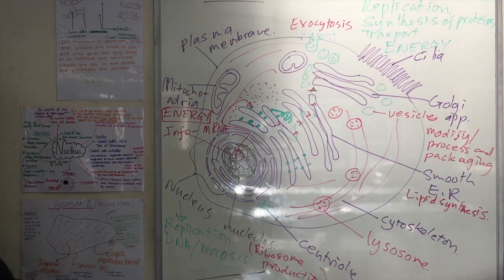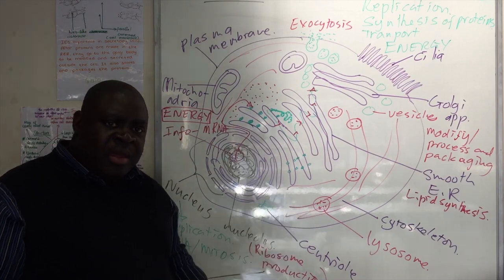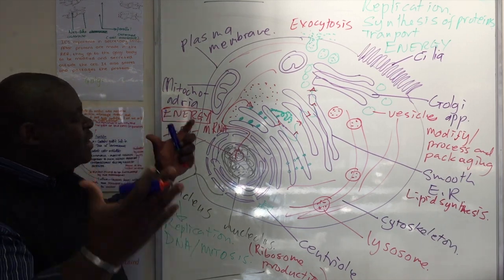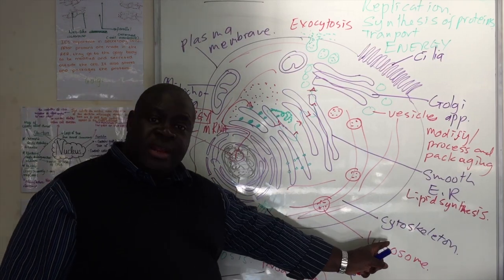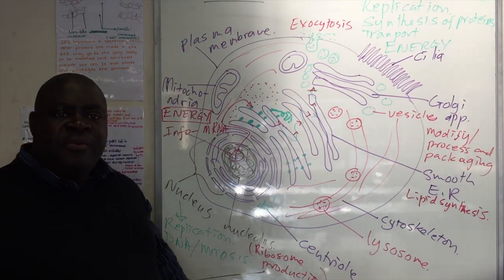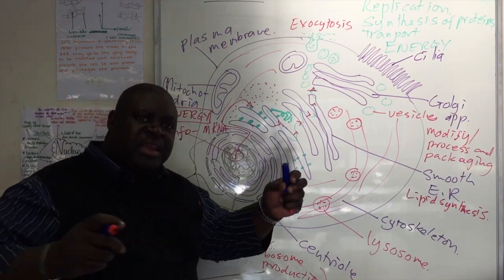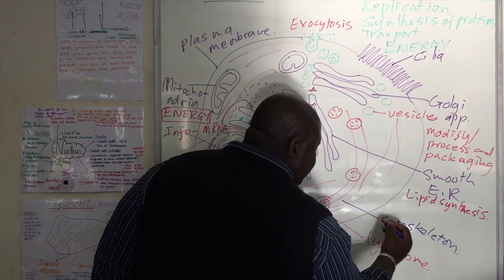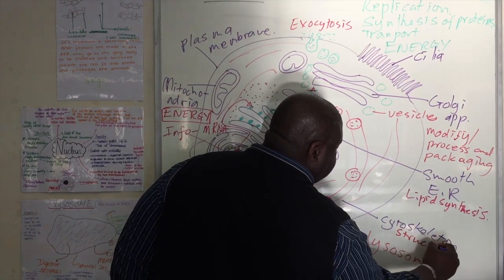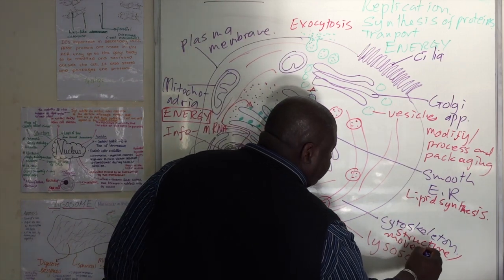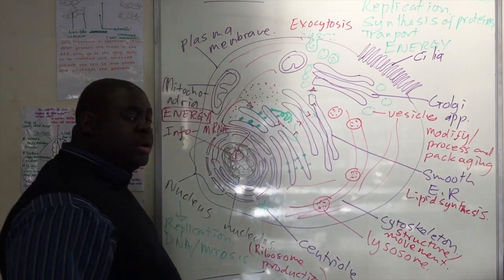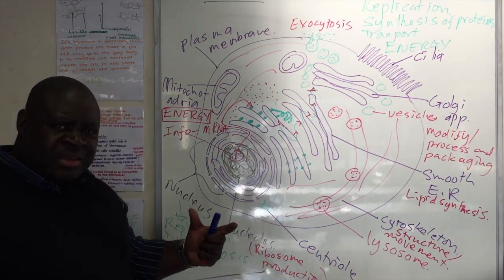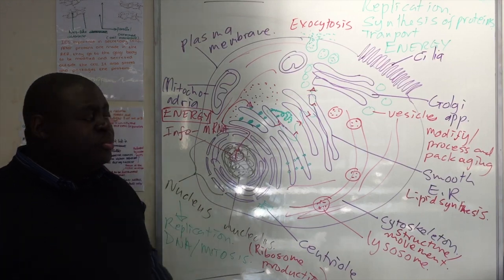We can see a lot of transport going on here — different materials moving around. The question is: what maintains this? What is holding and maintaining the structure of the whole cell? That is the job of the cytoskeleton. Think of the cytoskeleton as a real network on which all these organelles are attached and keep moving around. The cytoskeleton maintains the structure of the cell — especially in an animal cell — but also the movement and transport. Even if the cell must change shape, for example in phagocytosis to engulf pathogens, that is the job of the cytoskeleton, which is simply a network of microtubules throughout the cell.